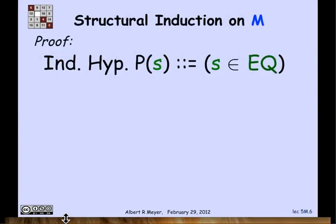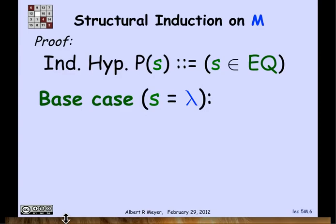Now the way I'm going to prove this is by defining my induction hypothesis, P of S, to be that S is in EQ. That is, S has an equal number of left and right brackets. Let's remember what the definition of M was. The base case of M was the empty string with no brackets at all.